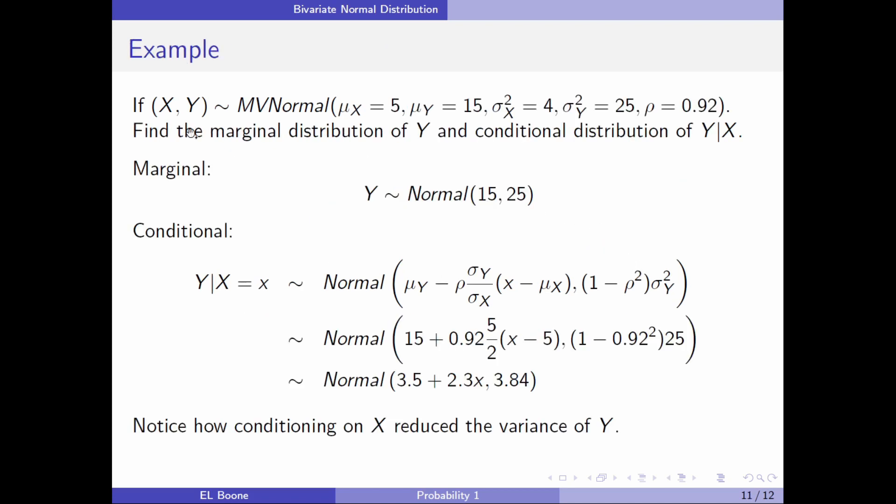Let's look at a quick example. Multivariate normal: μ_x equals 5, μ_y is 15, σ²_x is 4, σ²_y is 25, and ρ is 0.92. First find the marginal distribution. The marginal would just be y similar to normal 15, 25. That's it. I stole the 15, stole the 25, done.